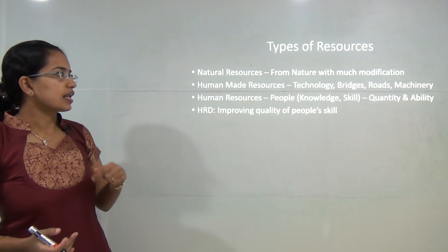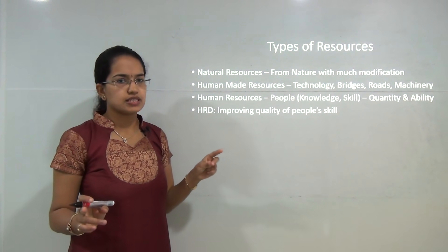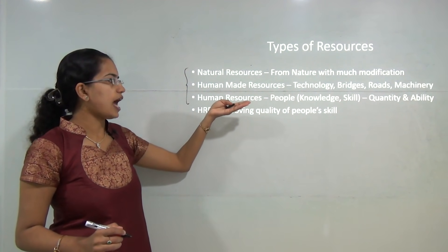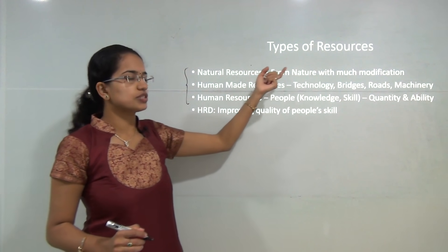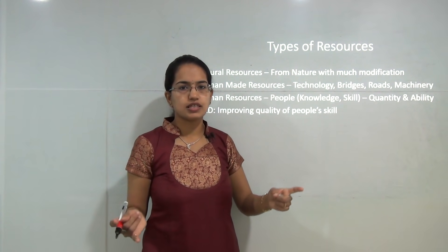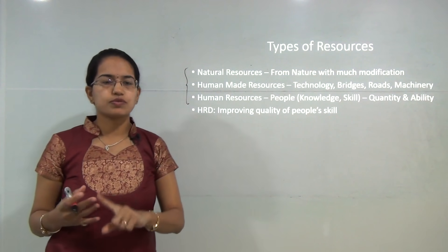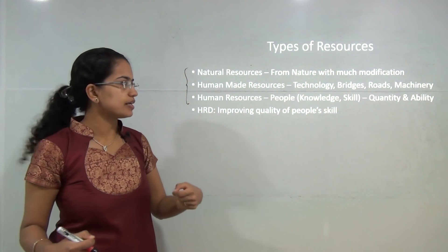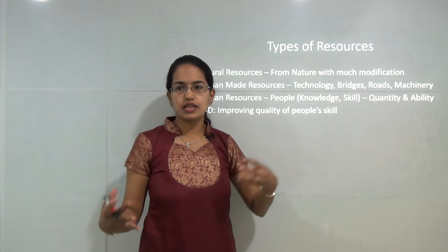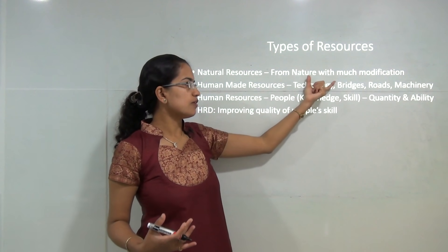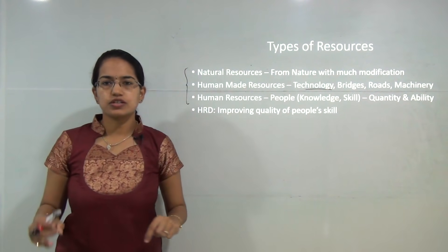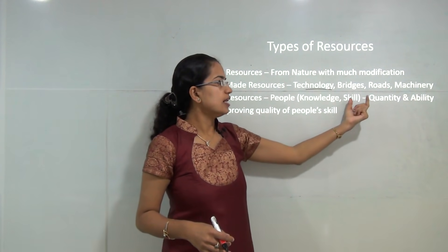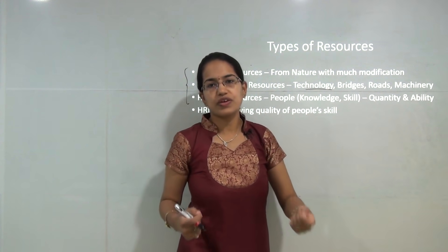Broadly speaking, there are three major types of resources: natural resources, human-made resources, and human resources. Natural resources are those which come directly from nature — green plants, trees, vegetables, fruits are natural resources. Human-made resources are resources that we have built up, for example bridges, roads, machinery, and vehicles, all built with the use of technology. Finally, the most important resource is the human resource itself — we the people with knowledge and skill have the ability to work around various issues.